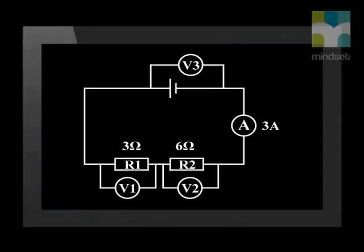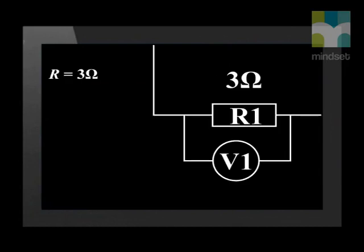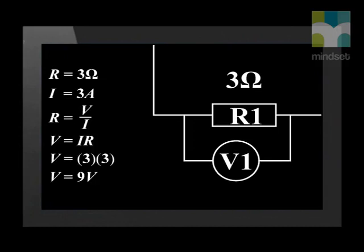We know that R equals V divided by I. To calculate V, we need both the current and the resistance. Since this is a series circuit, the current is the same throughout the circuit, so the current is three amperes. The resistance of the first resistor is three ohms. Therefore, using Ohm's law, we rearrange the equation to make V the subject of the formula. Substituting the values for I and R, the voltage across resistor one is nine volts.